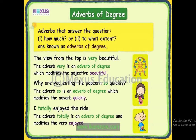For example: the view from the top is very beautiful — 'very' is an adverb that adds degree to 'beautiful.' Beautiful is normally beautiful, but here the extent is added with 'very.' Why are you eating the popcorn so quickly? Here 'so' becomes the adverb of degree, modifying 'quickly.' I totally enjoyed the ride — 'totally' describes the adverb of degree, meaning to what full extent.